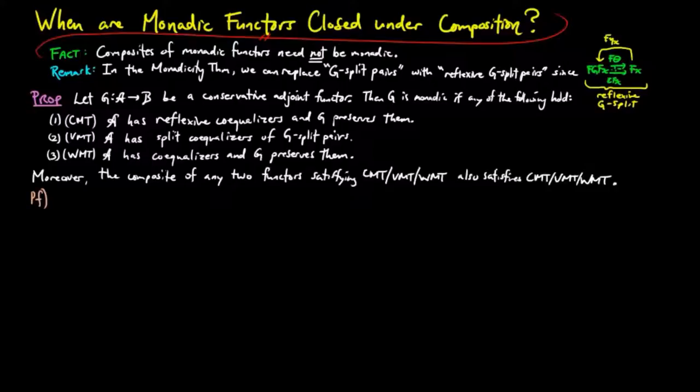For the proof, we use the monadicity theorem. Since g is assumed to be conservative and adjoint, it is enough to show a, the category A has co-equalizers of reflexive g-split pairs, and b, g preserves co-equalizers of reflexive g-split pairs.